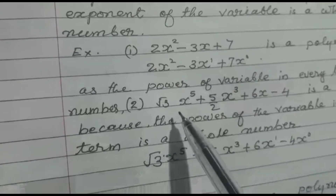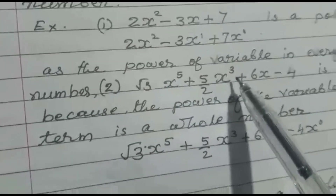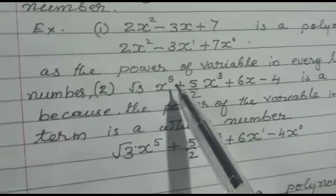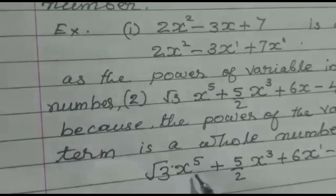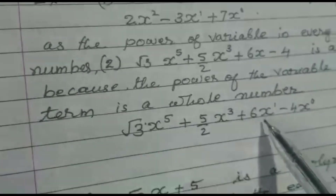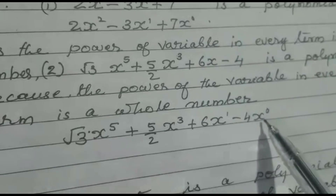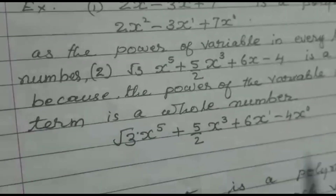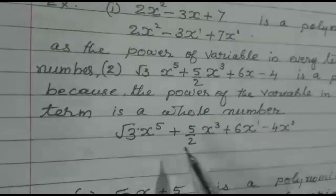Now the second example: √3·x⁵ + (5/2)x³ + 6x - 4. When we examine the powers of the variable x, the first term has power 5, the second term has power 3, the third term has power 1, and the last term has power 0. Since 0, 1, 3, and 5 are all whole numbers, this algebraic expression is a polynomial in the variable x.